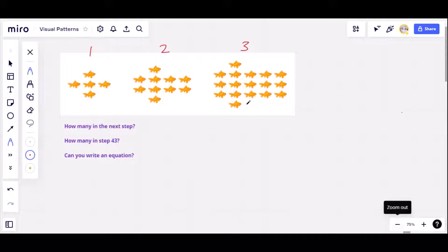And your challenge would be to look at this pattern and see if you can determine how many goldfish there would be in step number four. And if you can do that, how many in step 43? And along the way, could you write an equation that could be used to express the number of goldfish in any step of the pattern at all? If you'd like to accept that challenge, pause the video, give it a try.